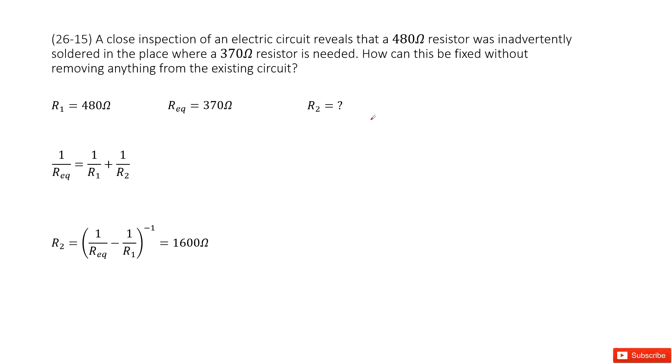So you can see we have a resistor. It is 480Ω. Then we need to do something to make it become a resistor with 370Ω. How can this be possible, right?